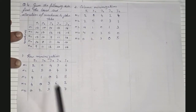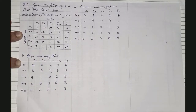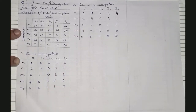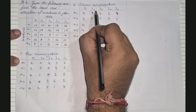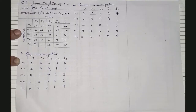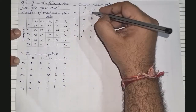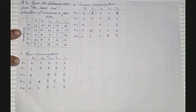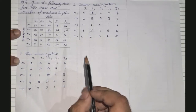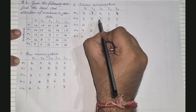Now that we have row and column minimization values, the next step is to assign zeros. Go row-wise and find rows with only one zero, then assign that zero with a square. Once a zero is assigned, all other zeros in the corresponding column get crossed out. In the first row there is only one zero — we assign it, and cross out any corresponding column zeros. In the second row there is one zero — assign it and cross out corresponding zeros.